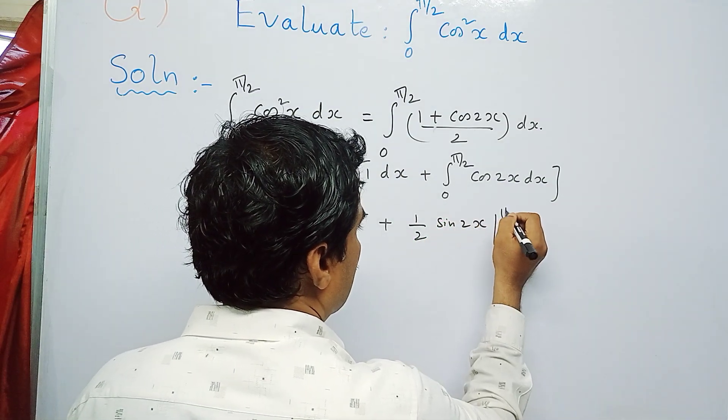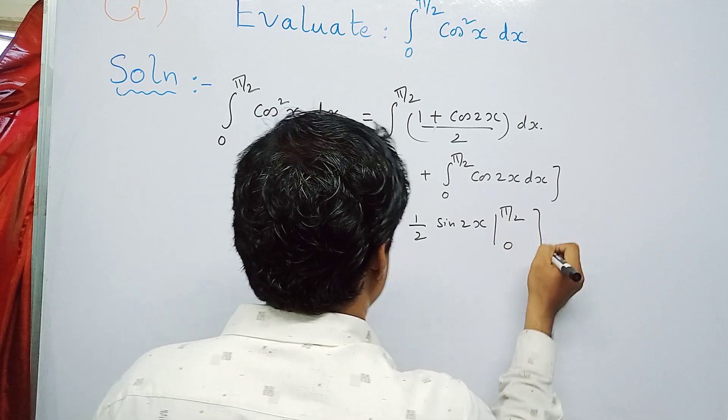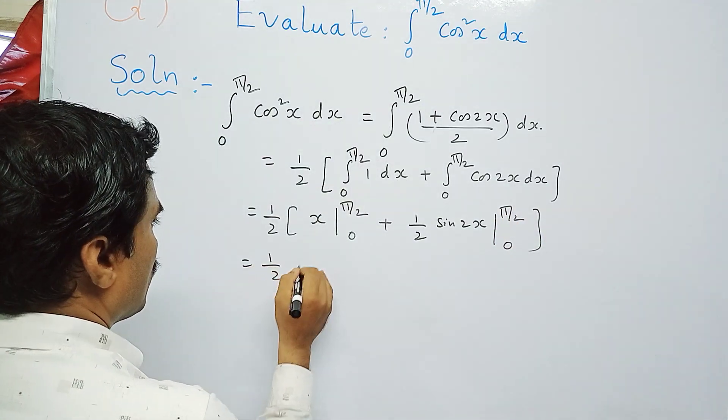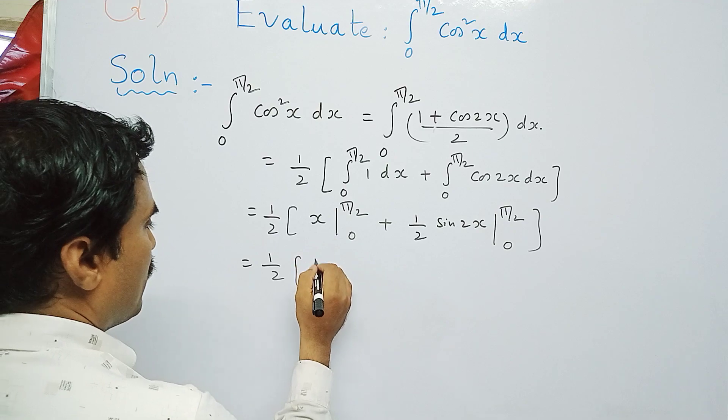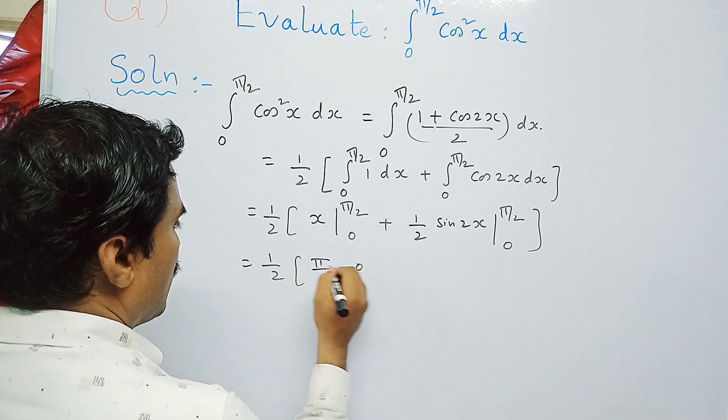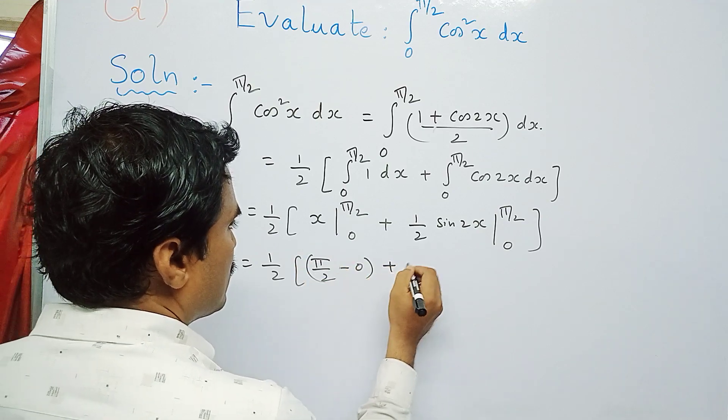So you can write this as 1/2 times. Put in place of x the upper limit first, so π/2 minus lower limit 0, plus 1/2 times now sin2.